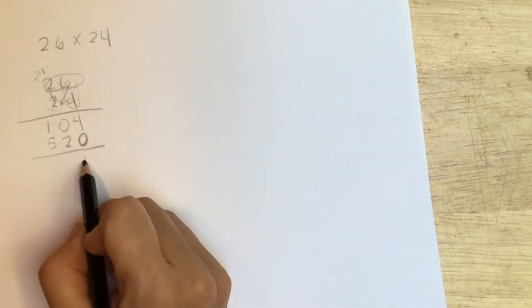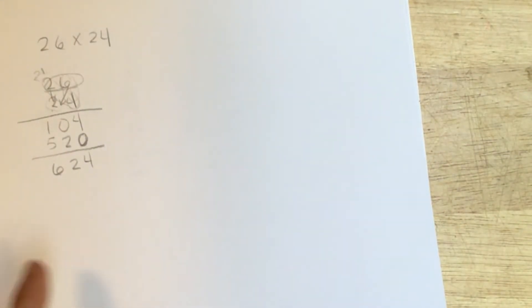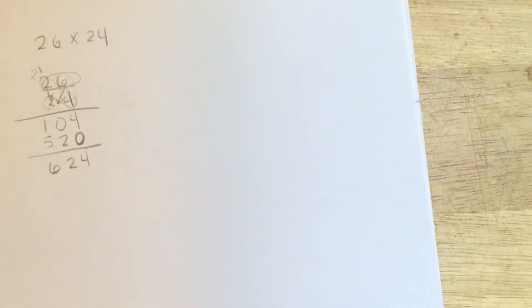And assuming I have multiplied correctly, this is how we would do the standard algorithm that most of us learned for multiplication. I think the Vedic method is far easier and more efficient.